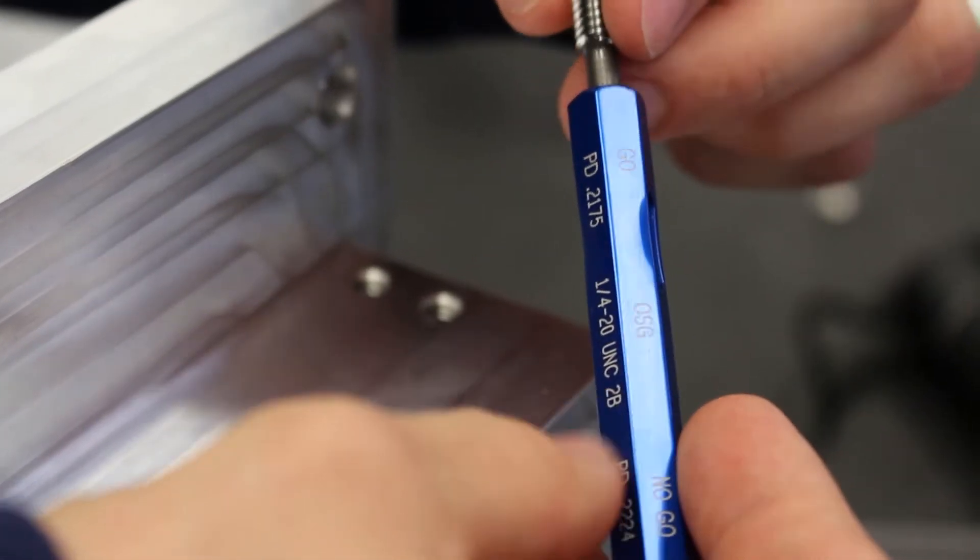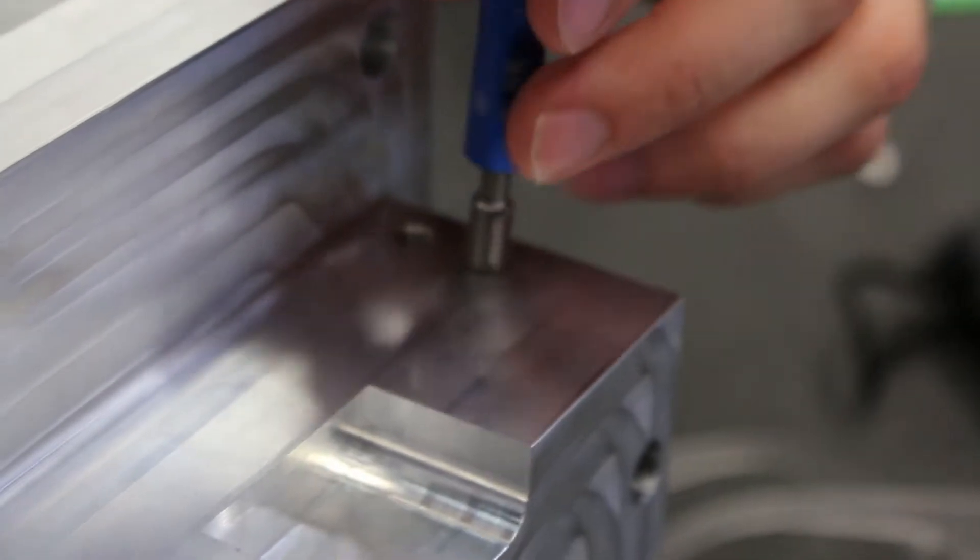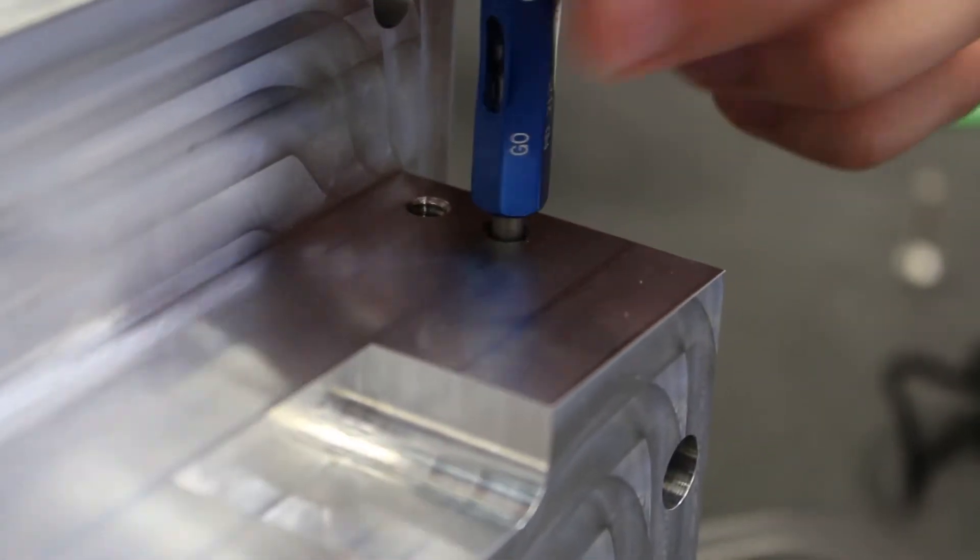The go side should easily go all the way in and should not bind. If it does not go in easily you will likely need to re-tap the thread.